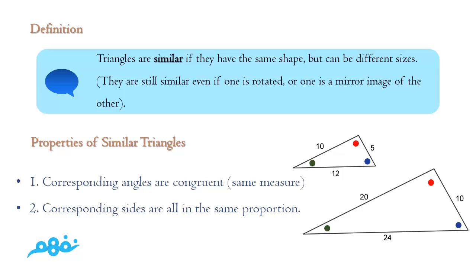Triangles can be similar if they have the same shape but can be different sizes. For example, these two triangles—one small, one large—are totally different in size but are similar because they have mutual properties between them.